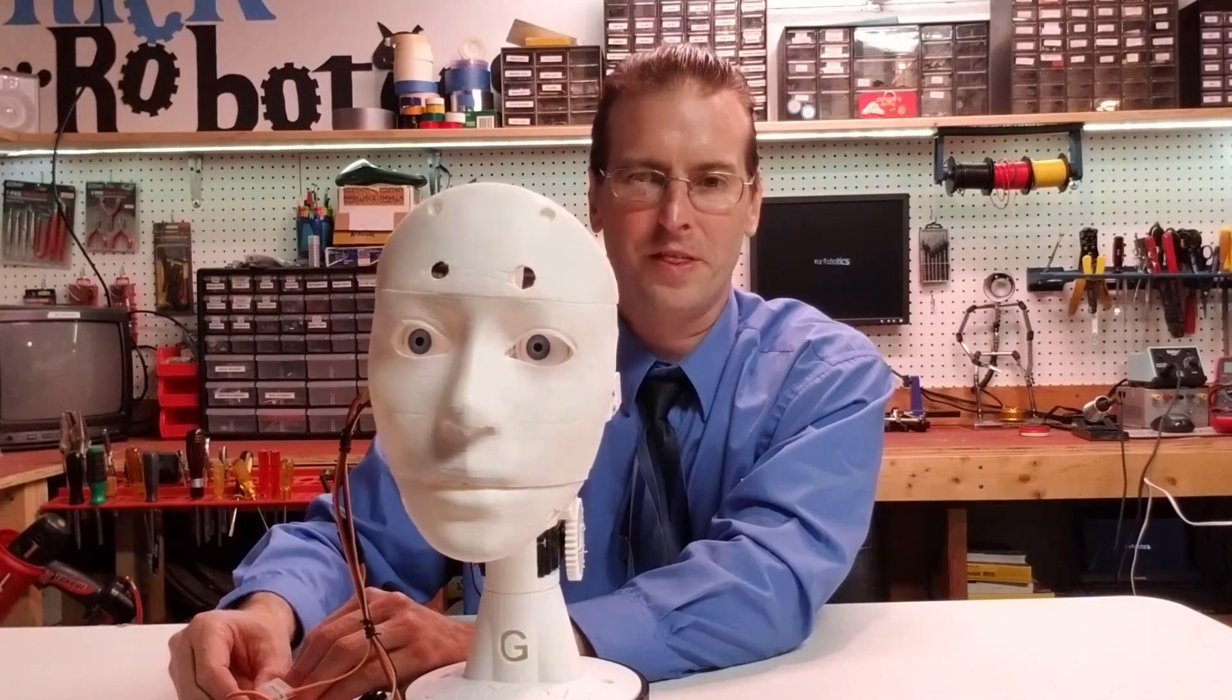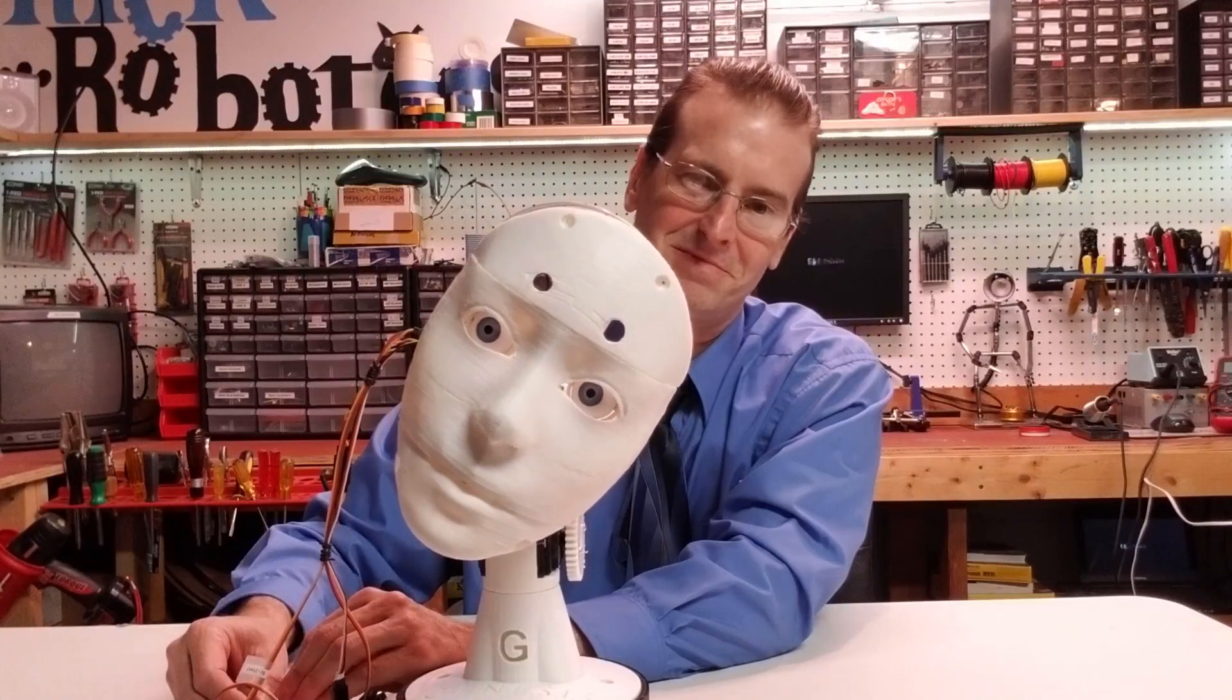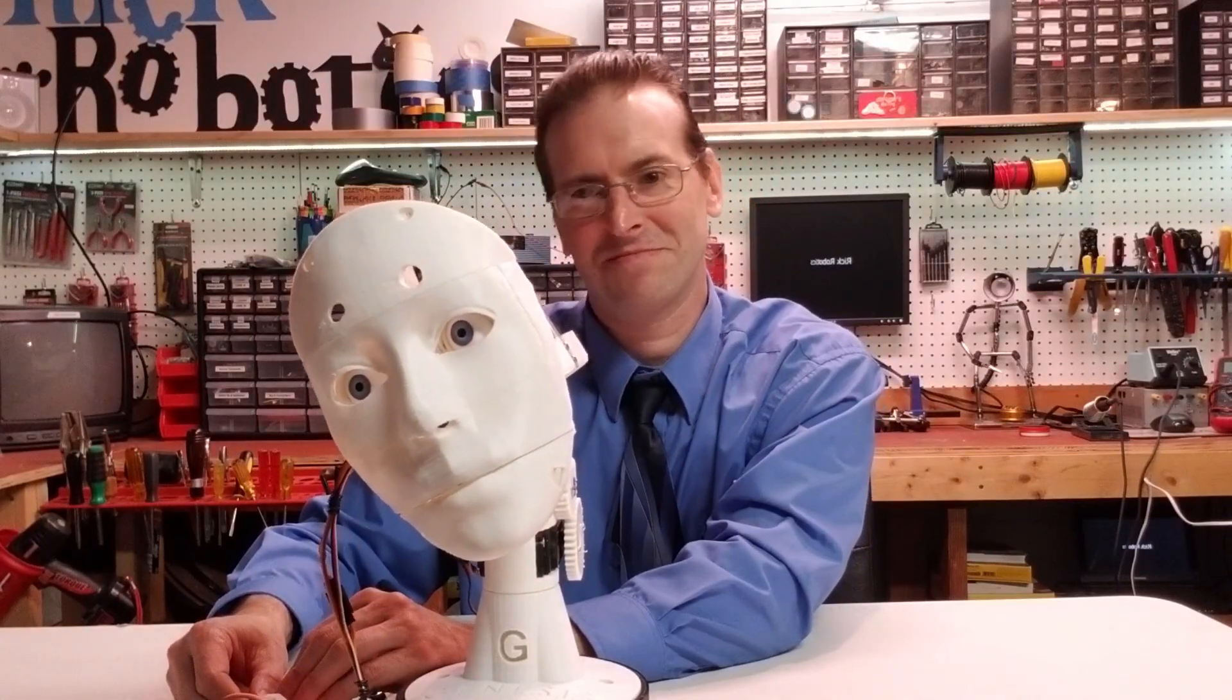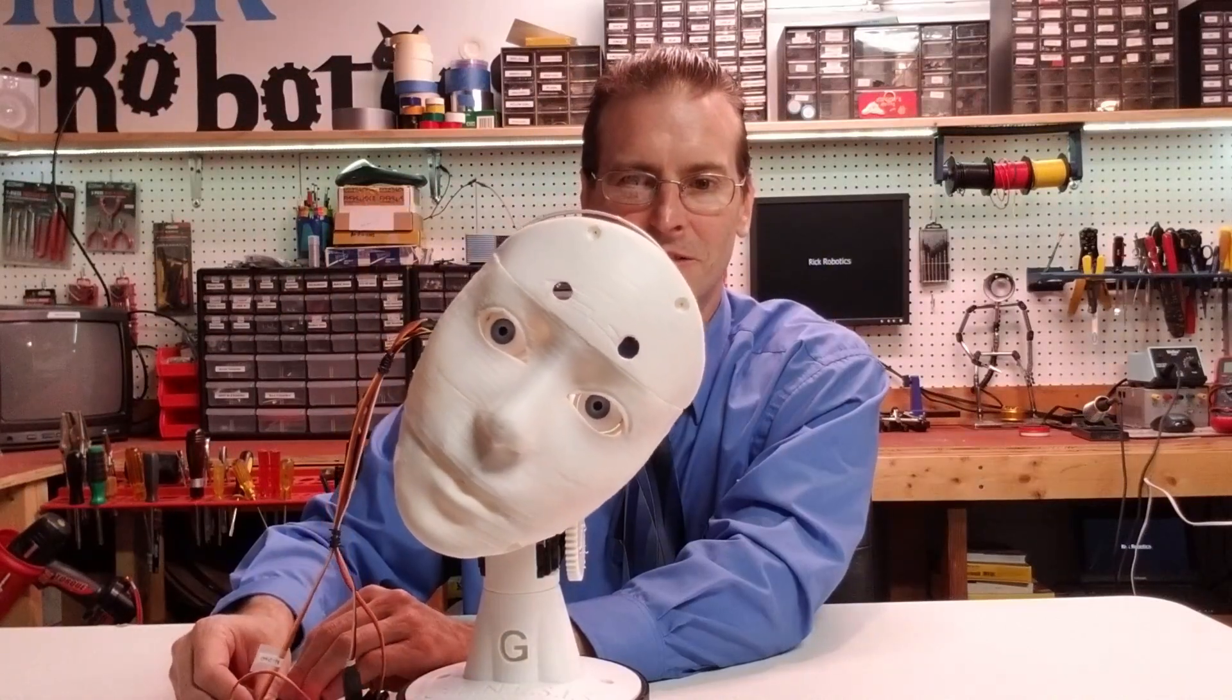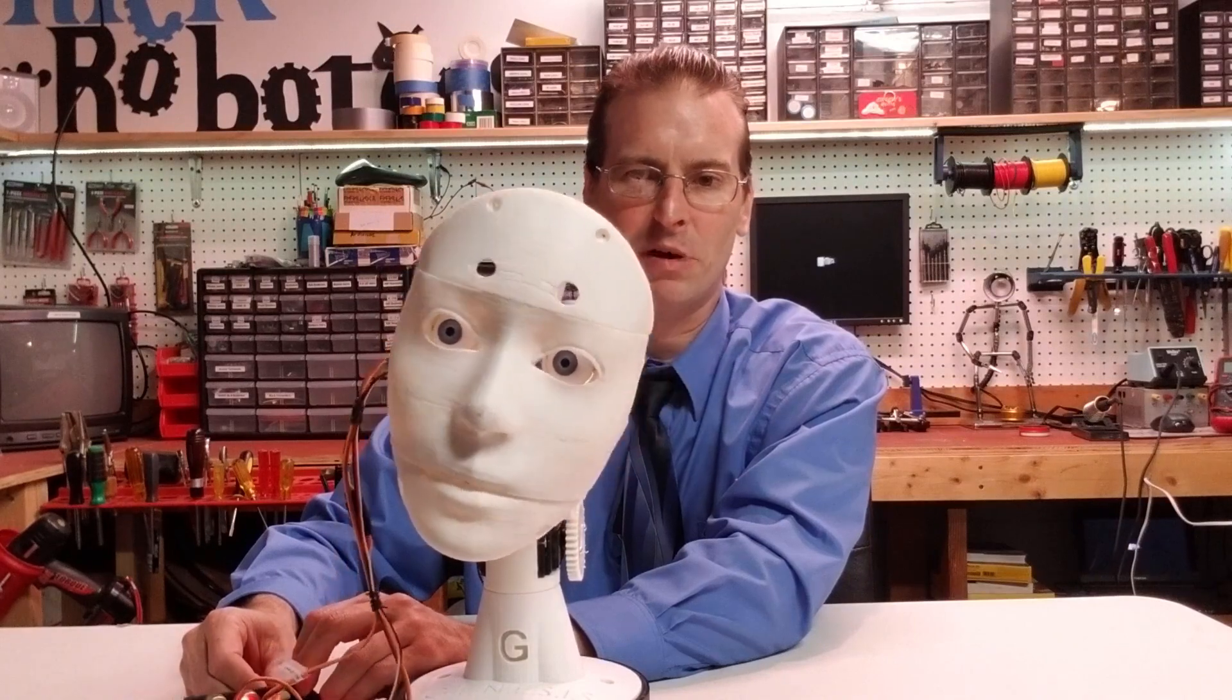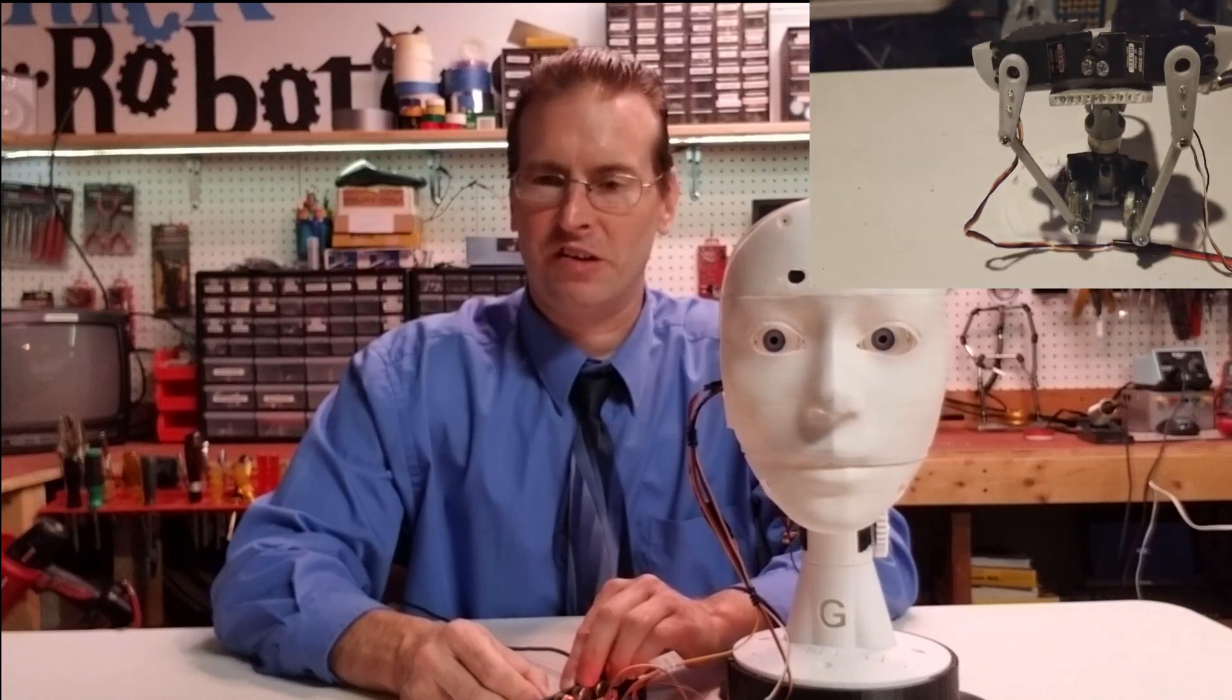For the third axis we can tilt the head side to side. This range of motion is probably somewhere between 100 and 120 degrees. I decided to add the third axis to make the head move a lot more naturally. And I actually experimented with five or six different types of designs and this is the one that I settled on.